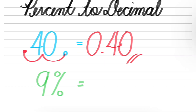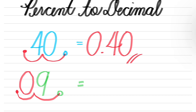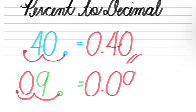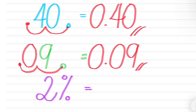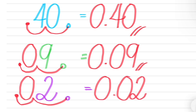How about 9% to decimal? Observe that in the previous example, 40 is a two-digit number. This time, 9 is a single-digit number. In converting a single digit like 1 to 9, the same rules apply: drop the percent sign so that it becomes the decimal point, then move the decimal point two places to the left, but we need to add or write 0 between the decimal point and the digit. In this case, it becomes 0.09, read as nine-hundredths. 9% is equal to 0.09. The same is true with 2%, where it becomes 0.02 or two-hundredths.